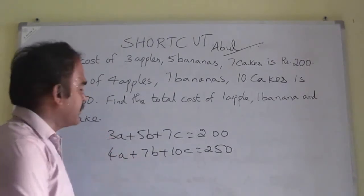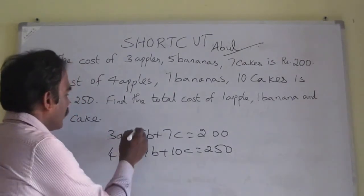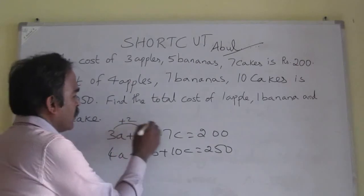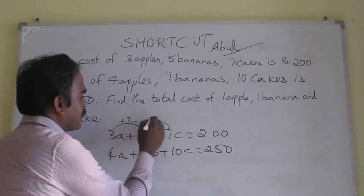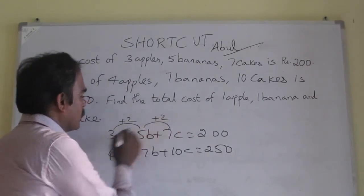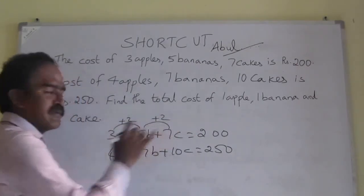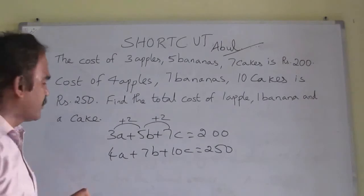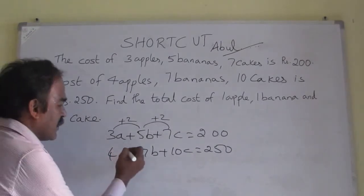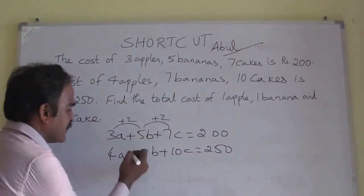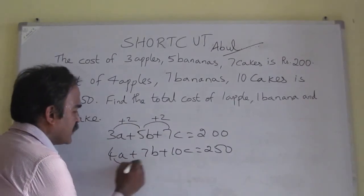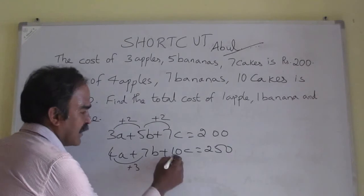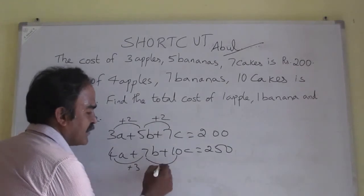Now observe the difference here. What is 5 minus 3? 2. What is 7 minus 5? 2. So the coefficient is incremented by 2. Now observe the difference in the second equation: 7 minus 4 is 3, and 10 minus 7 is 3.